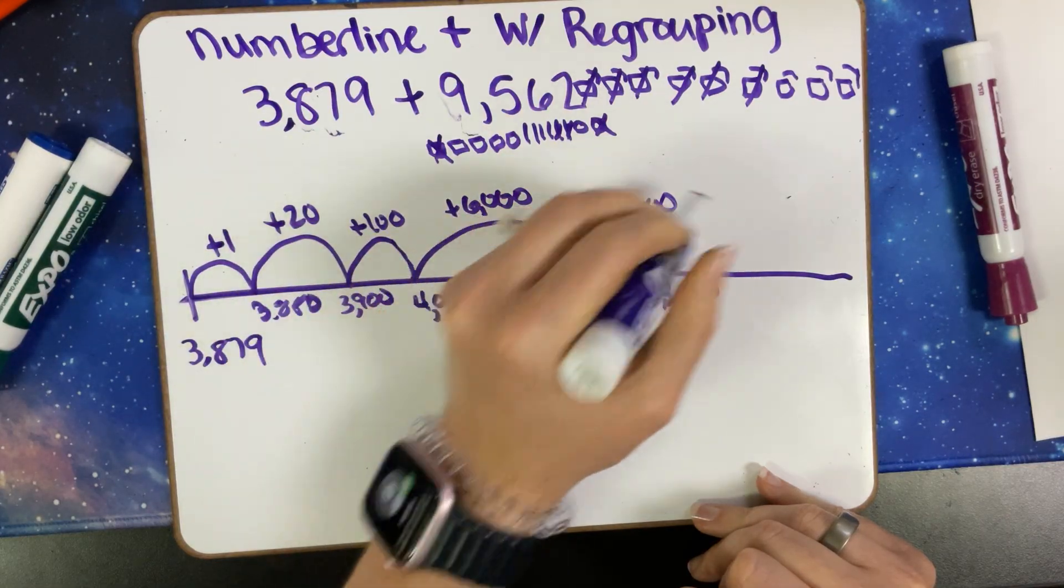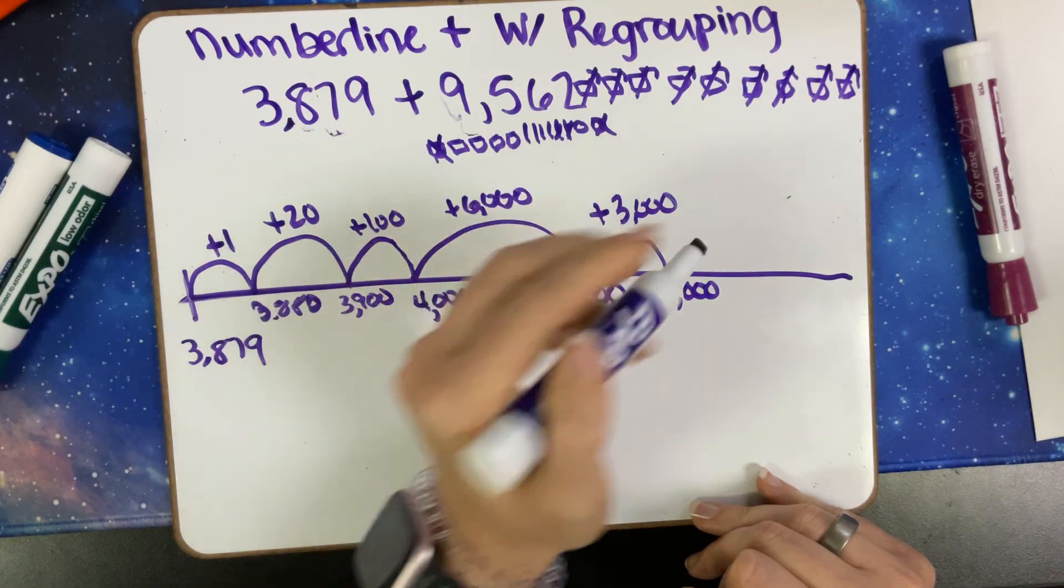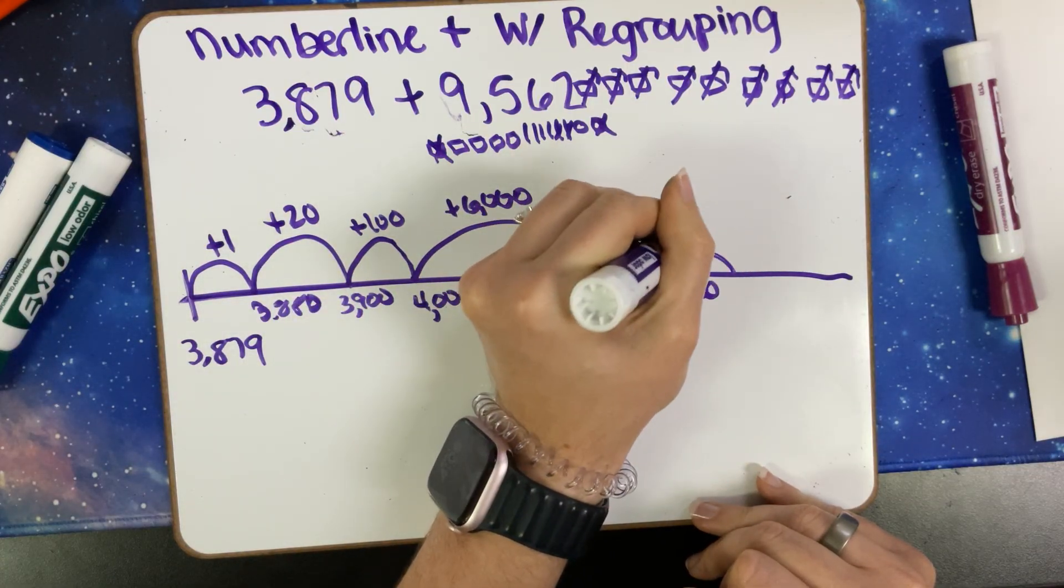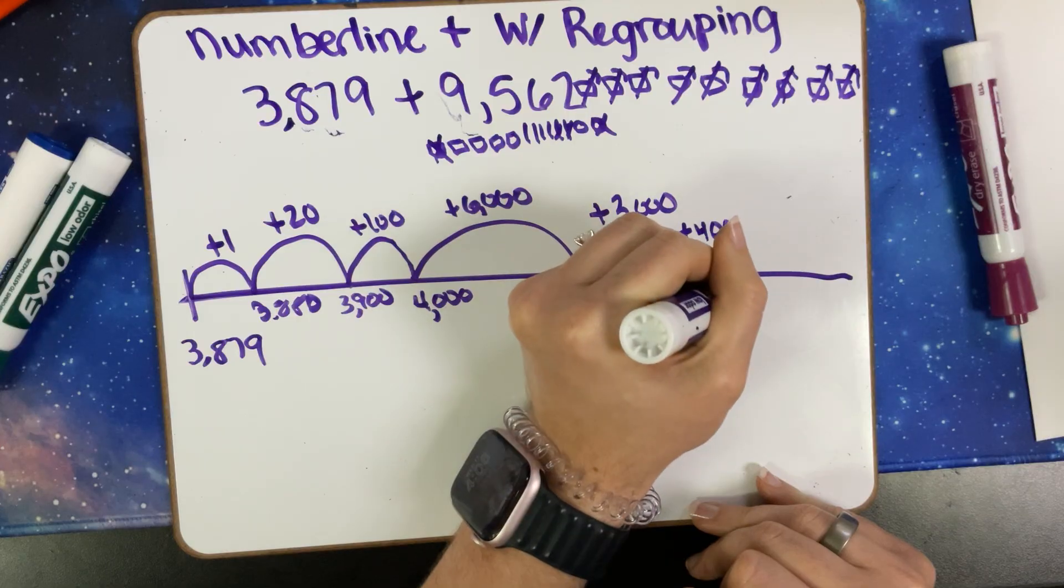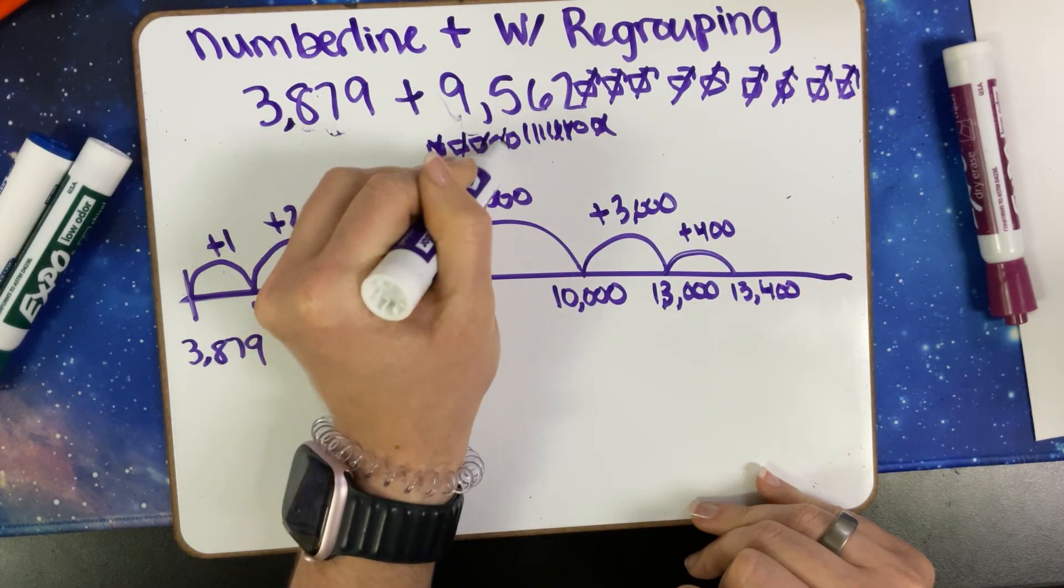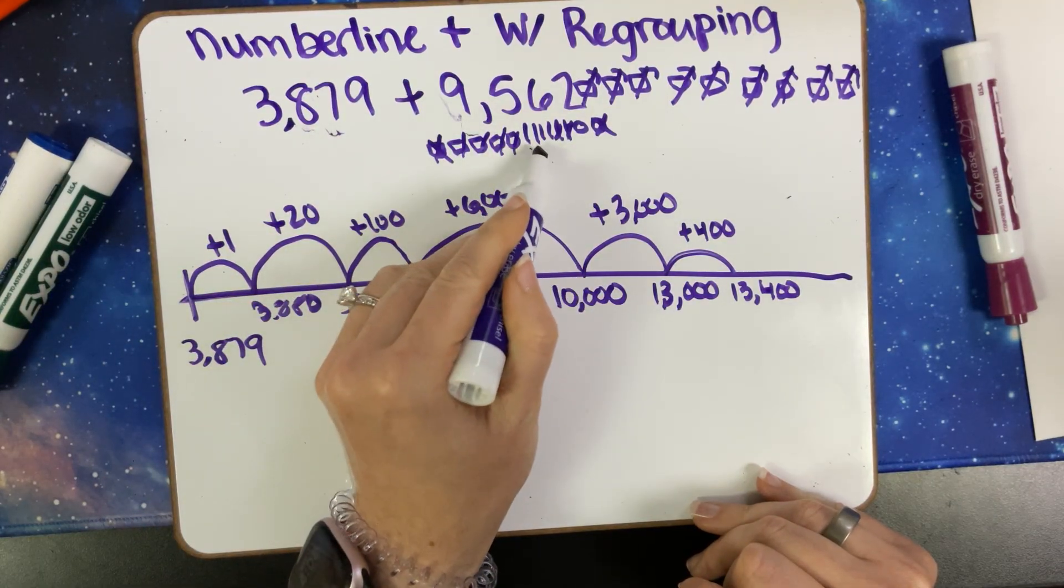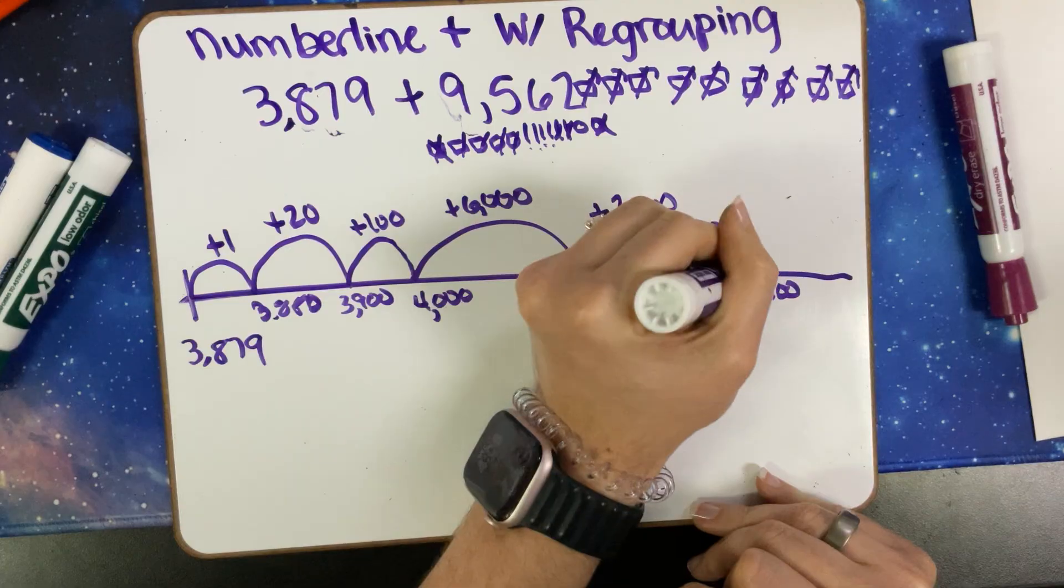We're going to cross the rest of those off. Now I have four hundreds that I can add, so let's add 400: 13,400—one, two, three, four. Then for our tens we have 10, 20, 30, 40 left, so we're going to add 40.